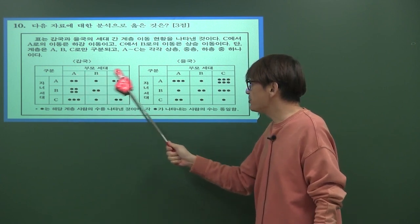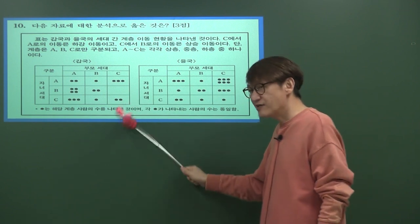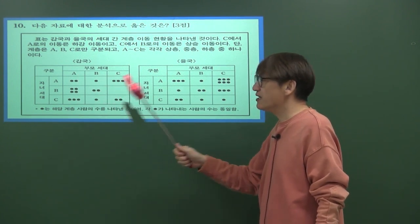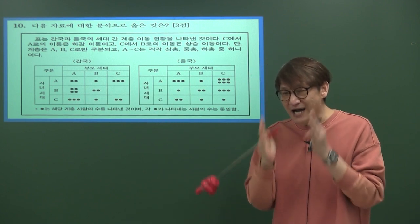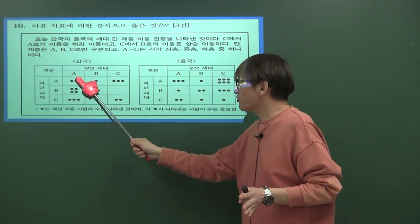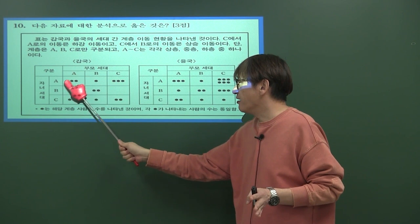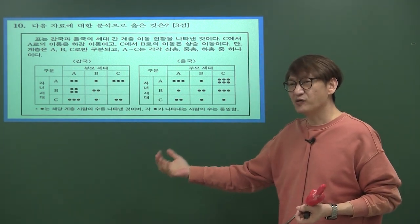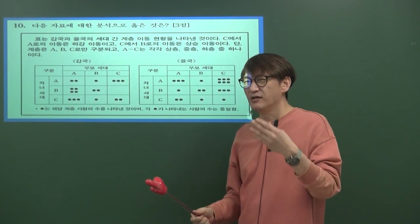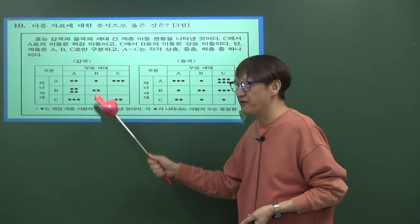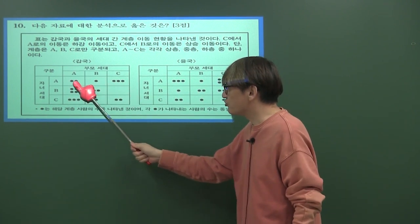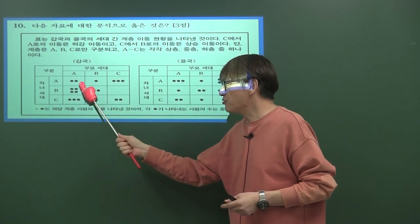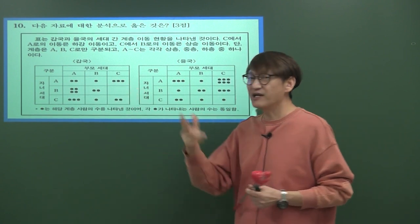10번 문제에서 A, B, C는 상층, 중층, 하층 중 하나이며, 점의 의미 해석이 핵심입니다. 점 하나는 한 칸만 이동했다는 것, 점 두 개는 두 칸 이동, 점 세 개는 세 칸 이동을 의미합니다. 2023년 3월·6월 모의고사에서부터 나왔던 방식으로, 이 점 해석만 하면 문제를 정복할 수 있습니다.